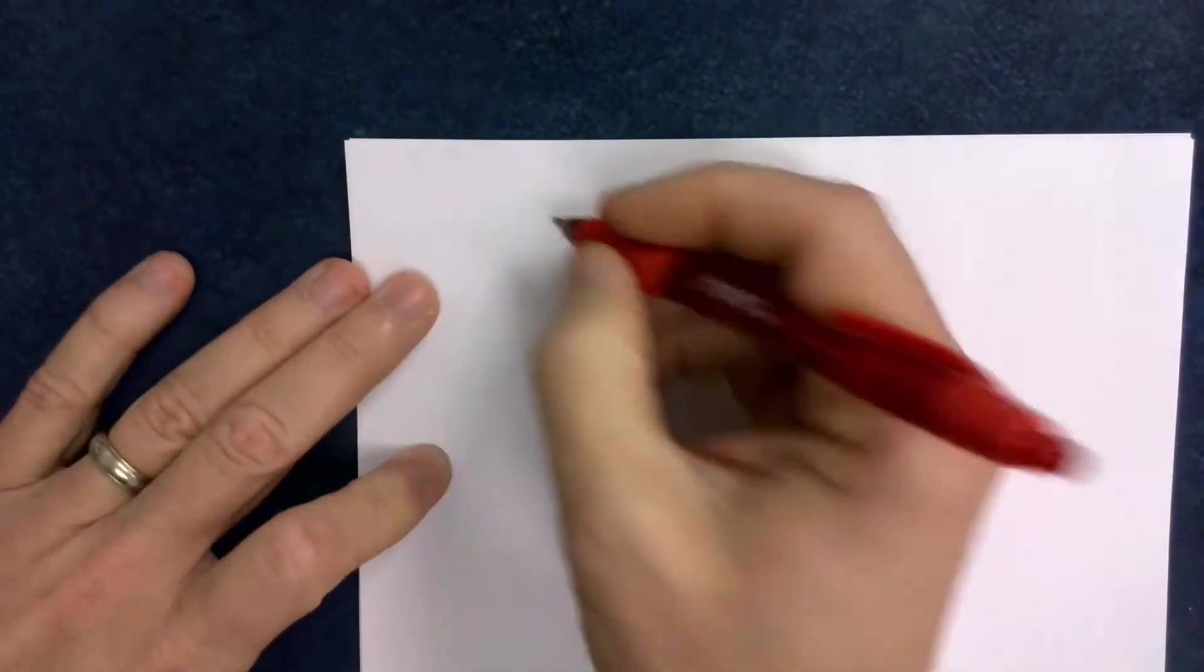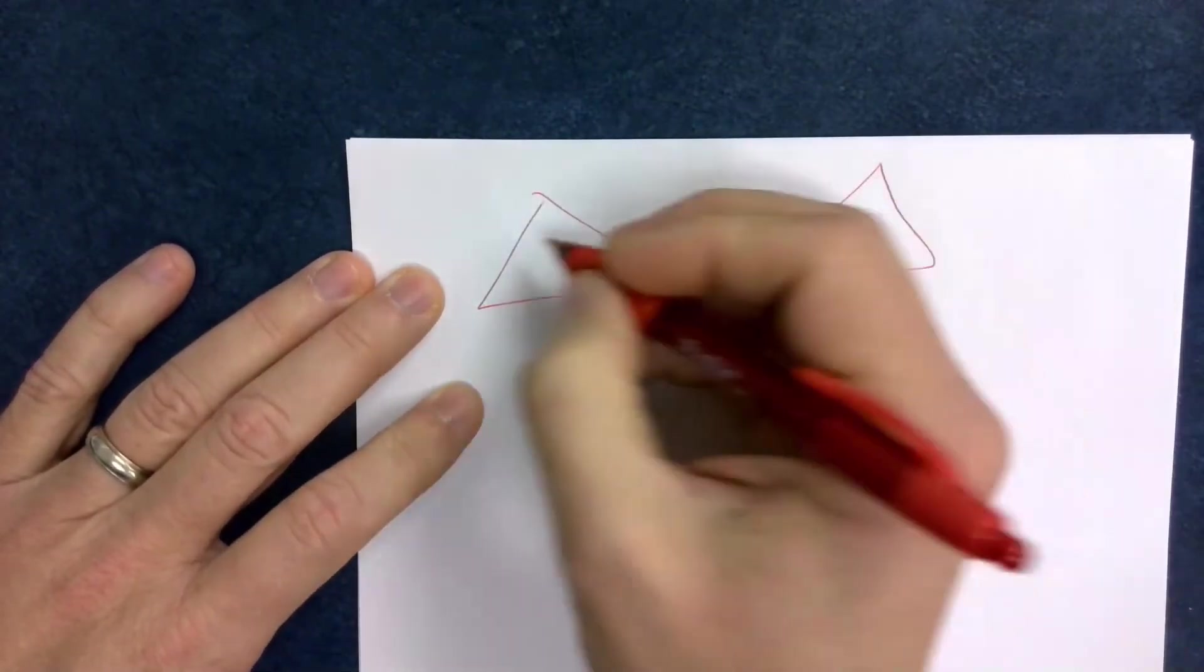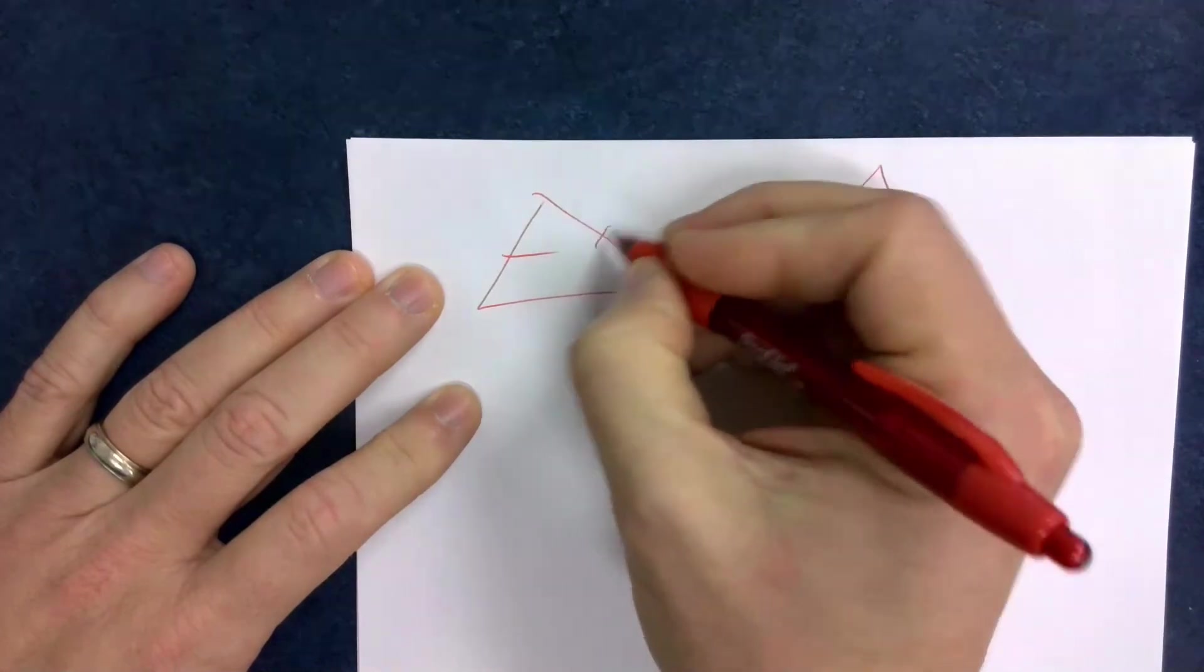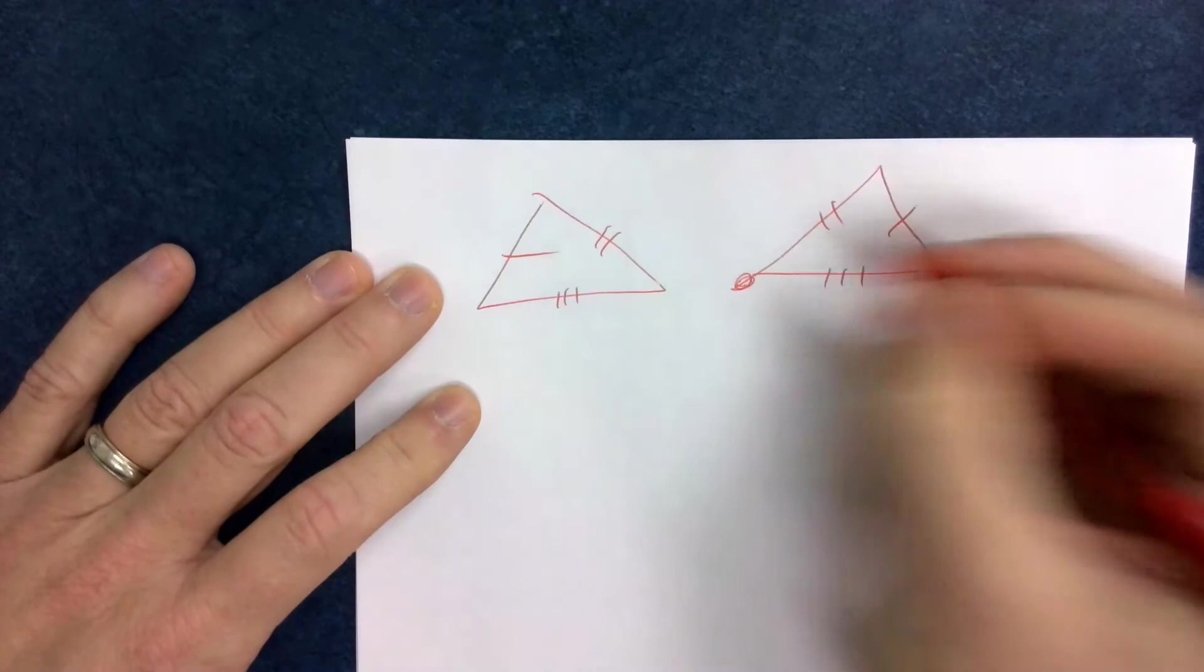If you have triangles that are congruent, so you got this triangle, congruent to this triangle like this, and I got boom, and I got boom, and I got ding, ding, and I got bing, bing, bing, bing, bing, bing, bing.